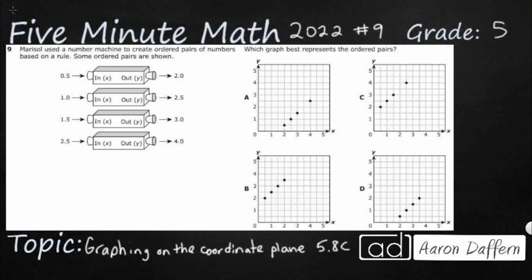We've got a number machine here being used to create ordered pairs. We don't really actually need to find the rule. It doesn't really matter what the rule is because they're giving us the ins, which are going to be our x's. And then it's going through this machine with a little bit of a rule, and then we're going to get the outs, which are the y's.